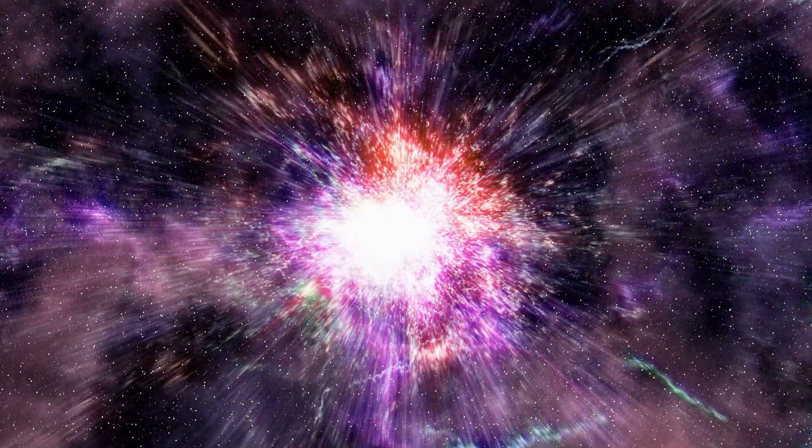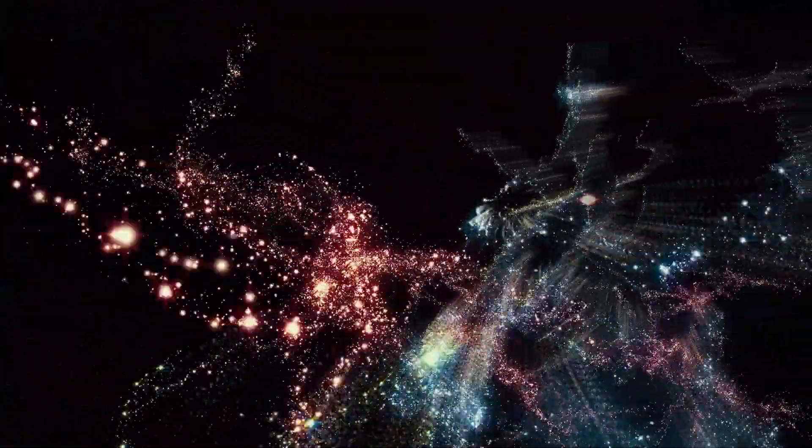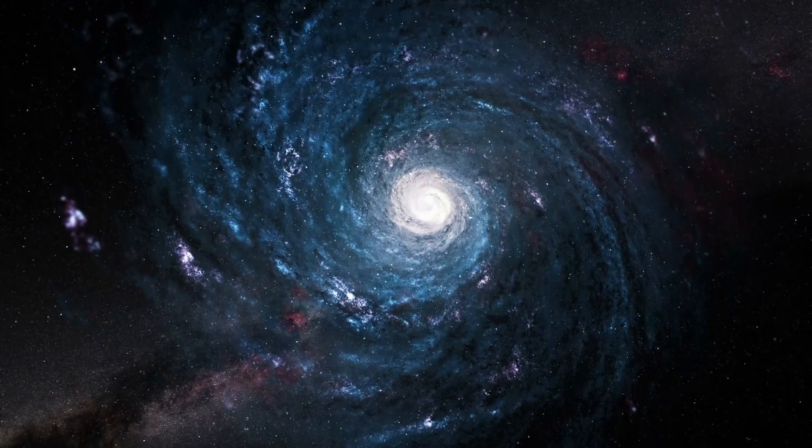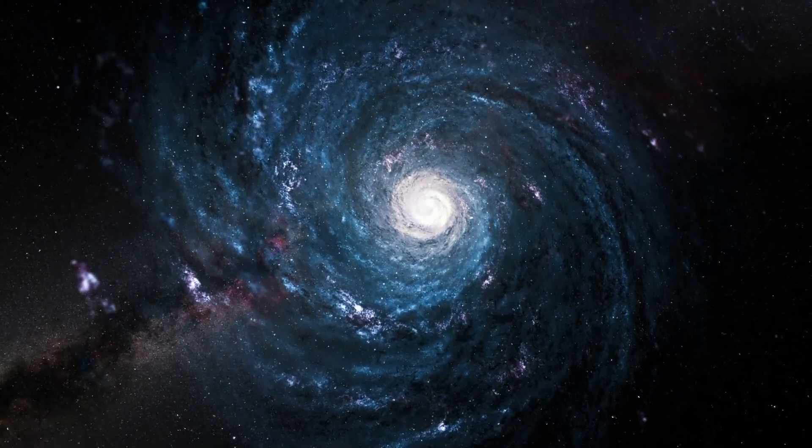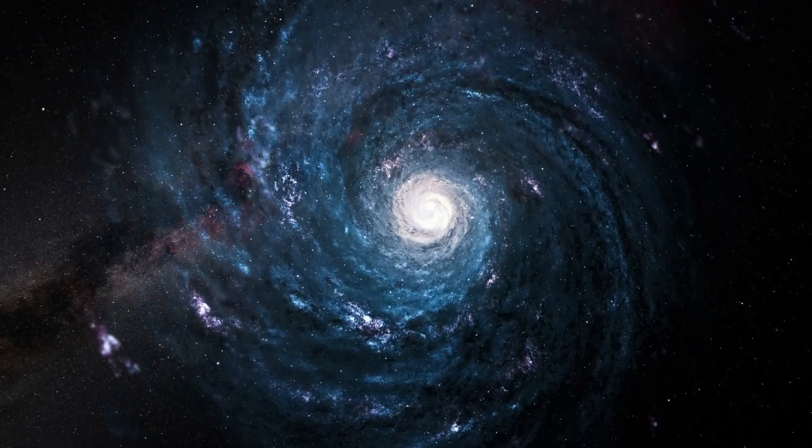But maybe both are right, if our universe's expansion is influenced by inherited properties from a pre-existing black hole. Then there are the impossible galaxies, massive, mature galaxies, spotted by JWST, that shouldn't exist so early in cosmic history. How did these complex structures form so quickly, just a few hundred million years after the Big Bang?